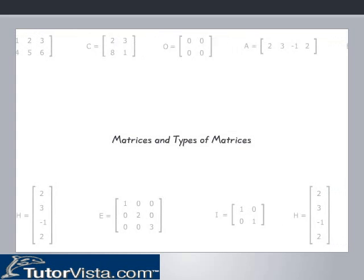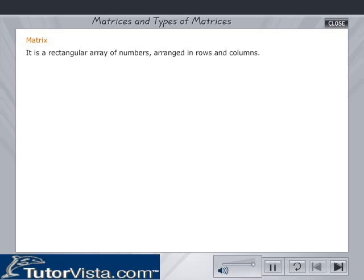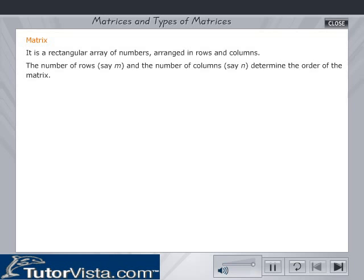Let us understand the concept of a matrix and some types of matrices. A matrix is a rectangular array of numbers arranged in rows and columns. The number of rows, say m, and the number of columns, say n, determine the order of the matrix.